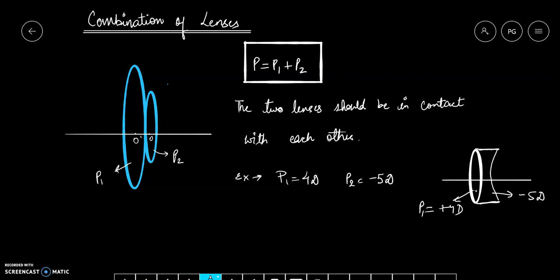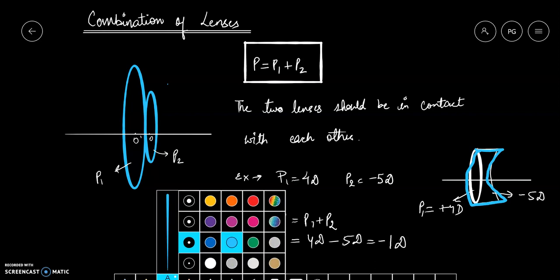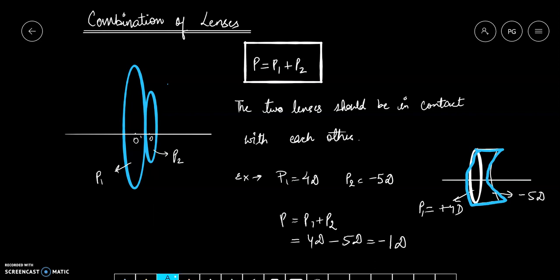The resultant power will be P equals P1 plus P2, that is 4 diopter minus 5 diopter equals minus 1 diopter. It means this resultant is going to behave like a concave lens with power minus 1 diopter.